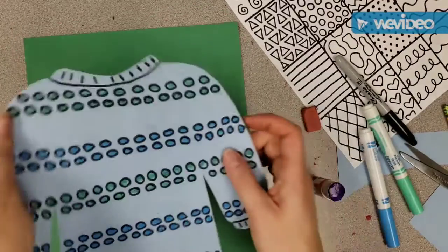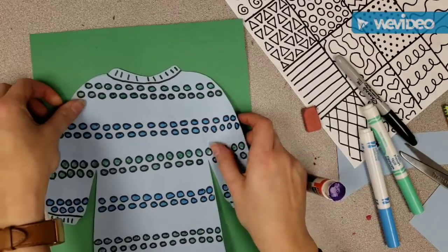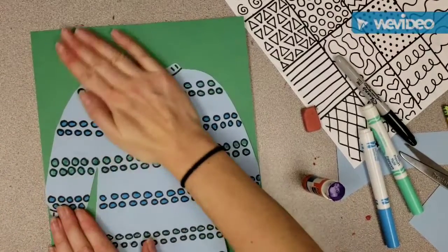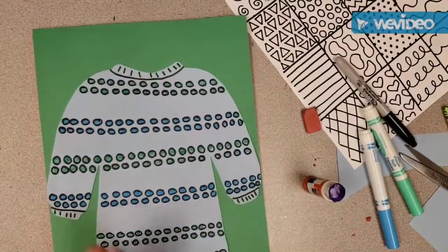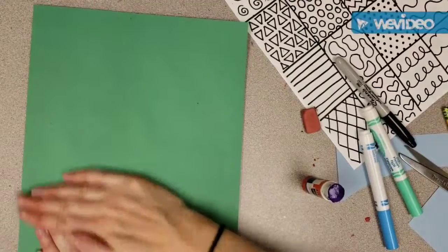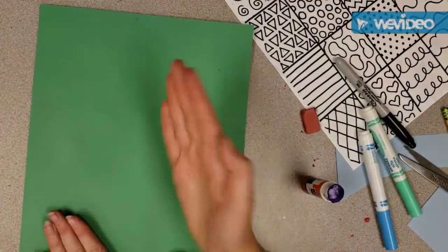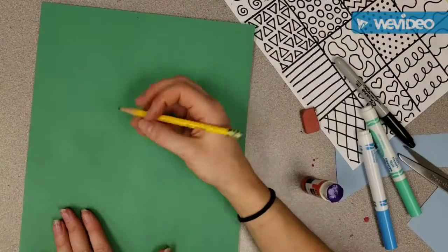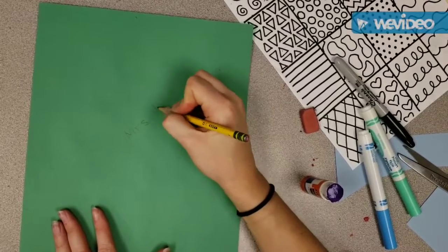Then, just flip your sweater over, stick it where you want it, and rub it down. If it doesn't seem like it's staying down, flip it on its back and rub the back of the paper. And while it's flipped over, you can take a pencil and write your name.